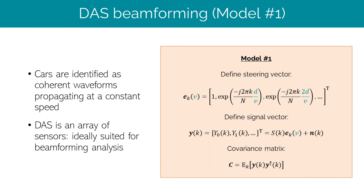With these definitions of the covariance matrix and steering vectors, we can perform MUSIC beamforming over a grid of velocities and for a sliding time window over which the Fourier transforms are computed. Note that with these definitions, the covariance matrix is not a function of frequency while the steering vectors are. To resolve this, we compute the covariance matrix only over a narrow frequency band with central frequency k-bar, and define the steering vectors only at k-bar. This is of course not ideal, and so we propose a second model that addresses this issue.